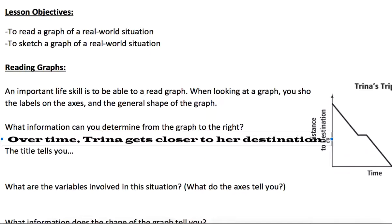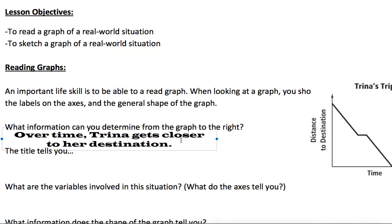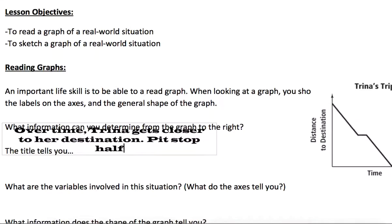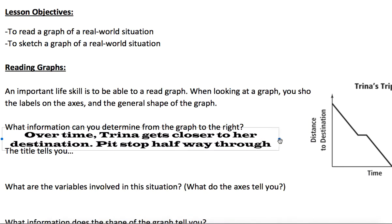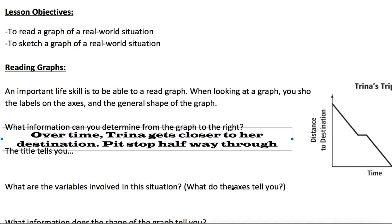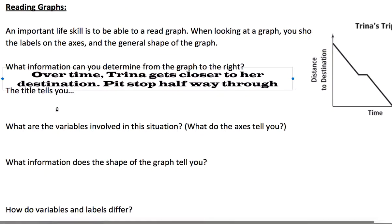We also see that there's a break period here where it goes kind of flat. So we could say also something to the effect of having a little bit of a break. Maybe there's a pit stop or Trina needs to rest, so there's a pit stop about halfway through. Notice, pretty short, sweet, talks about the graph. The title tells us that this is a journey, this is happening over time, so this is a trip for Trina.